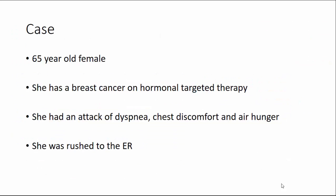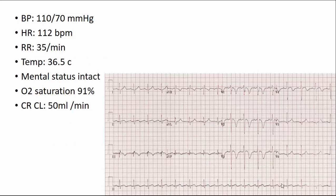We have a case of a 65-year-old female with breast cancer on hormonal-targeted therapy who presented with dyspnea, chest discomfort, and air hunger. Primary examination showed blood pressure of 110/70, heart rate of 112 bpm, respiratory rate of 35 breaths per minute, temperature normal, mental status intact, oxygen saturation above 90%, and creatinine clearance of 50 mL/min. ECG showed changes consistent with pulmonary embolism and severe right ventricular strain.